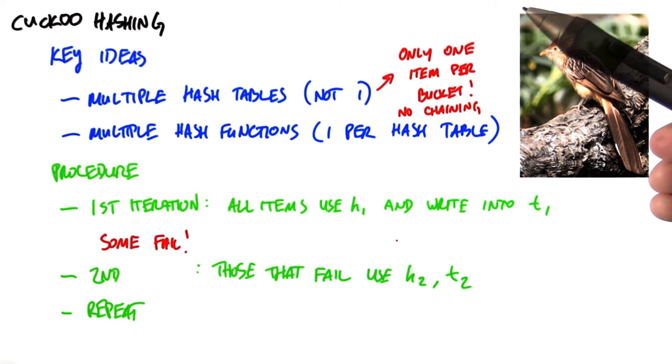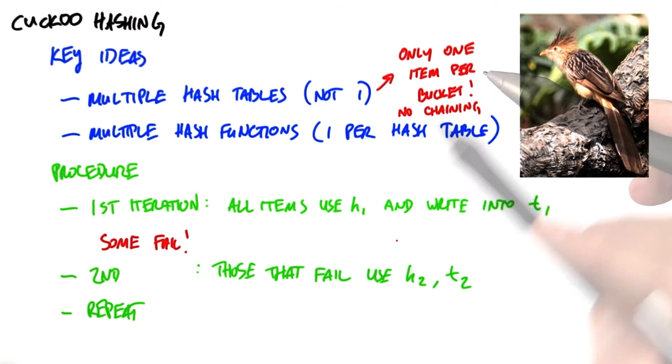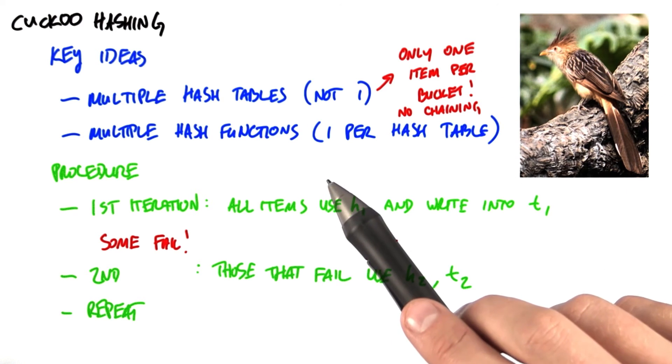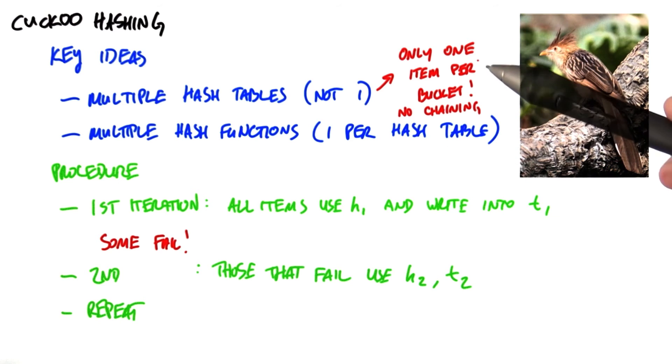First, all the items that we want to hash, we'll use the first hash function and try to hash into the first hash table. Some of them will collide and fail. And by that I mean we're going to try to write multiple items into the same bucket, but we're only allowing one item per bucket. That's okay.